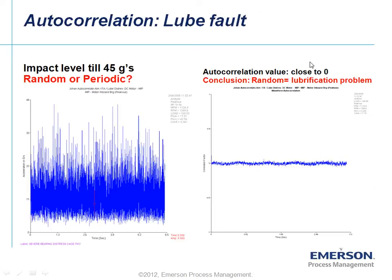Now we will take a closer look at some examples. On the left side you see a waveform — in this case a peak view waveform — with high impacting levels of roughly 45 Gs. The fundamental question is: is this data repeatable or random? If we execute the autocorrelation process on this waveform, the autocorrelation factor is close to zero, so we have a lubrication issue.